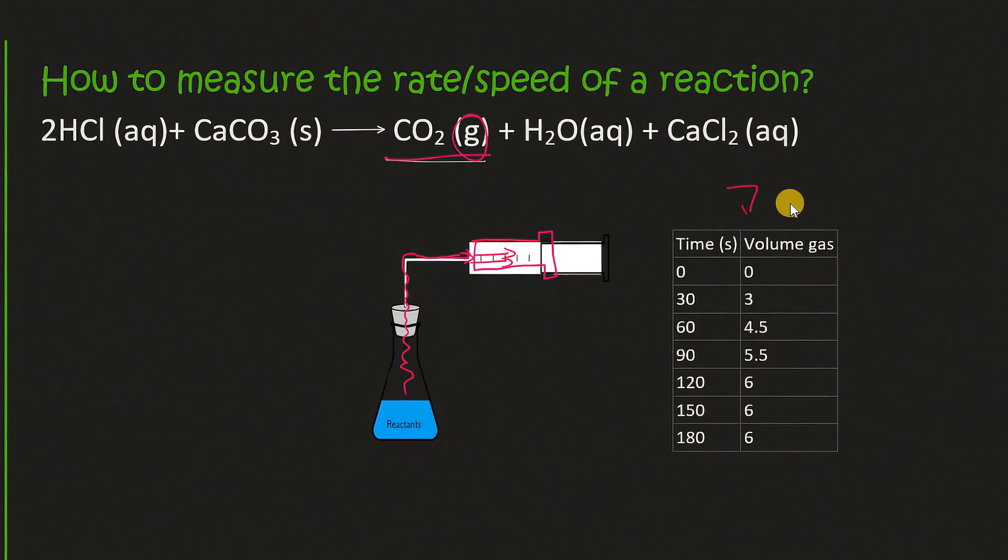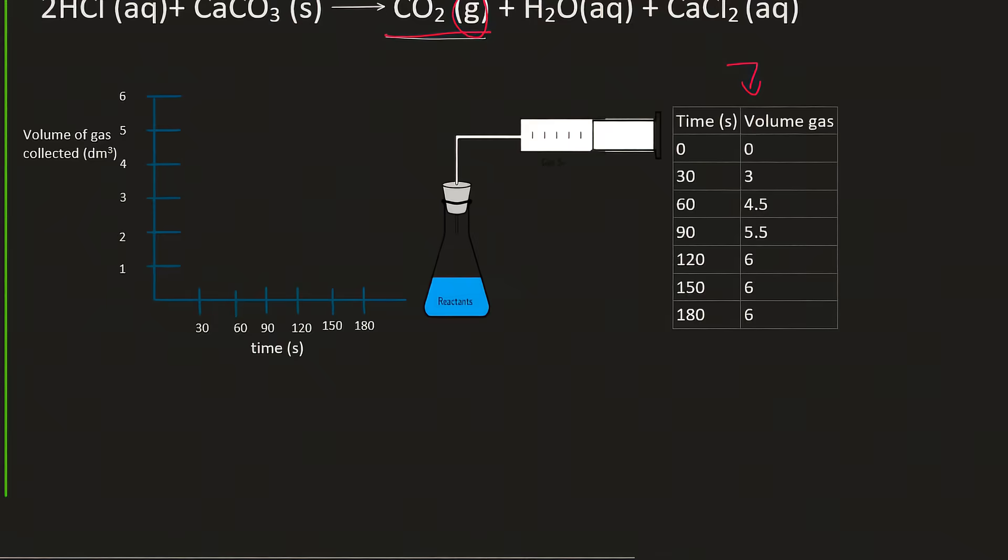And then we could use this table to plot a graph. And then we could use the values in the table and plot our graph. And so then what we can see is that at the end of the reaction the line becomes flat. Now what that symbolizes is a reaction that is now complete.